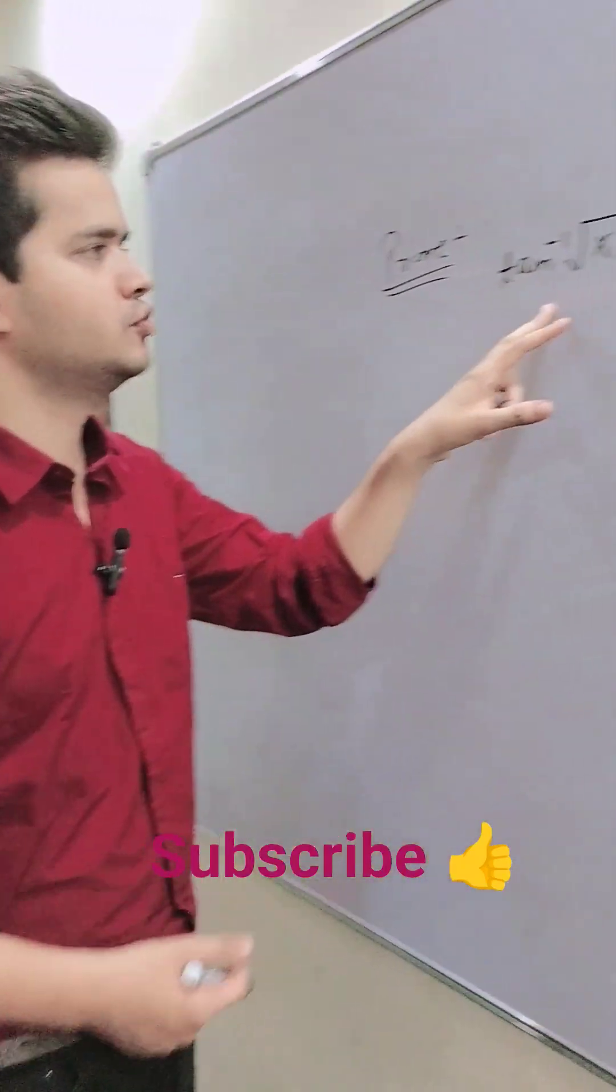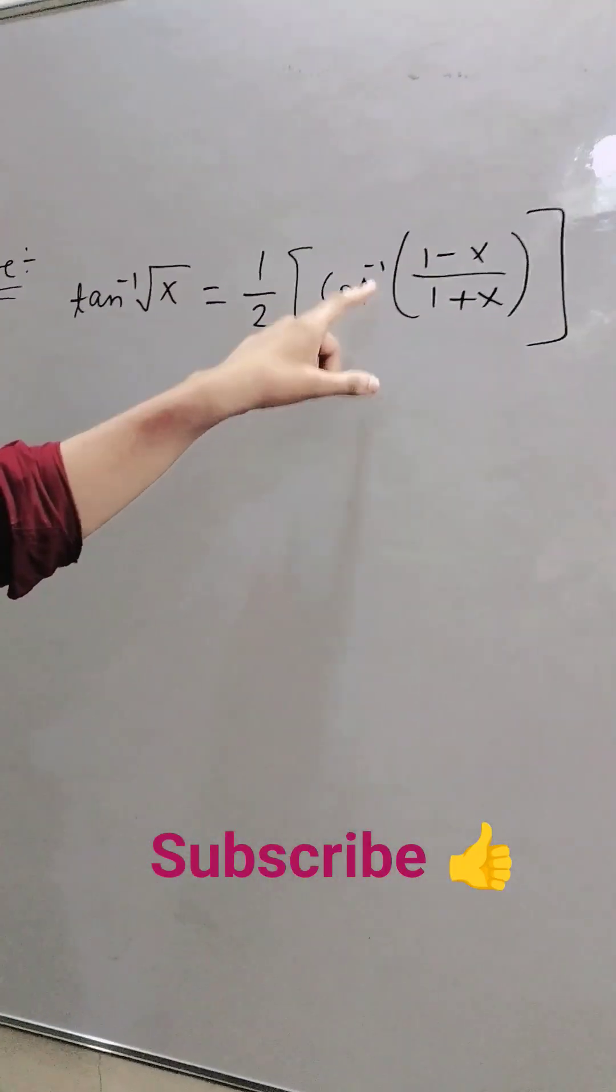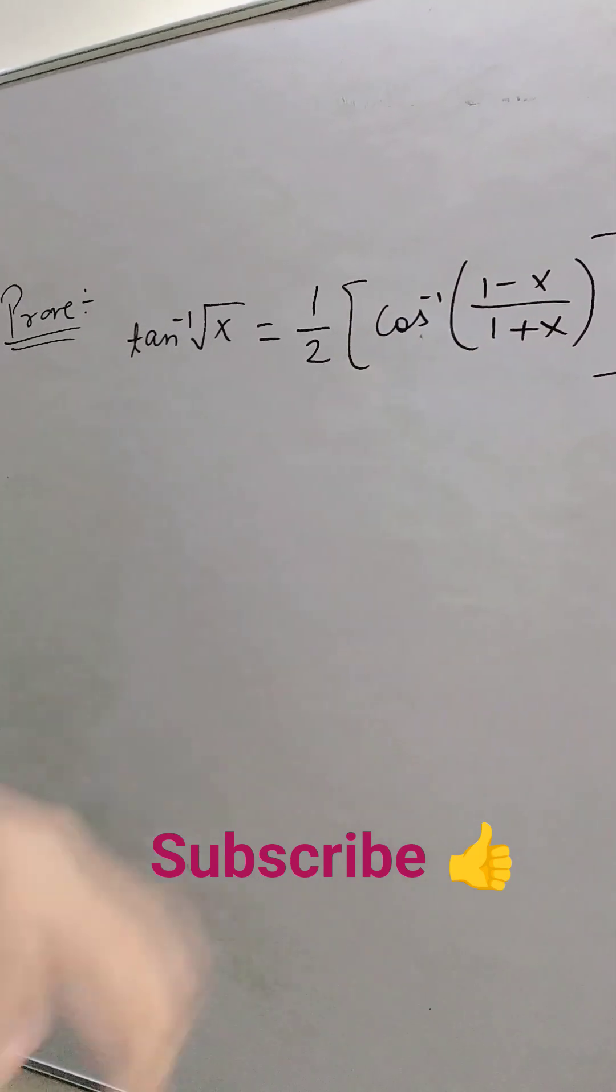The question is: Prove tan⁻¹(√x) = (1/2)cos⁻¹((1-x)/(1+x)).